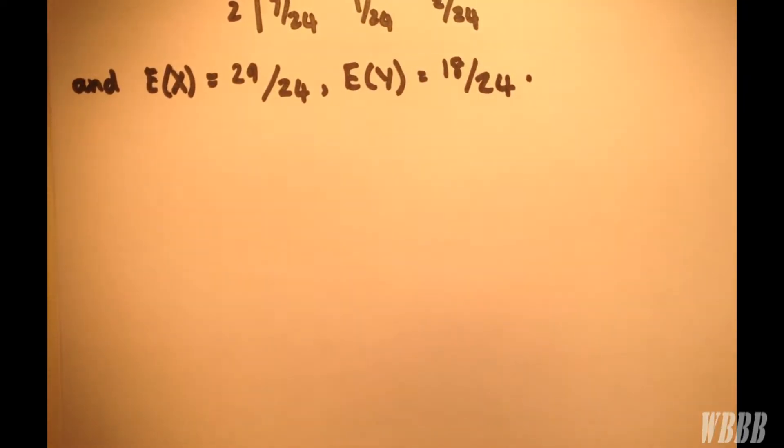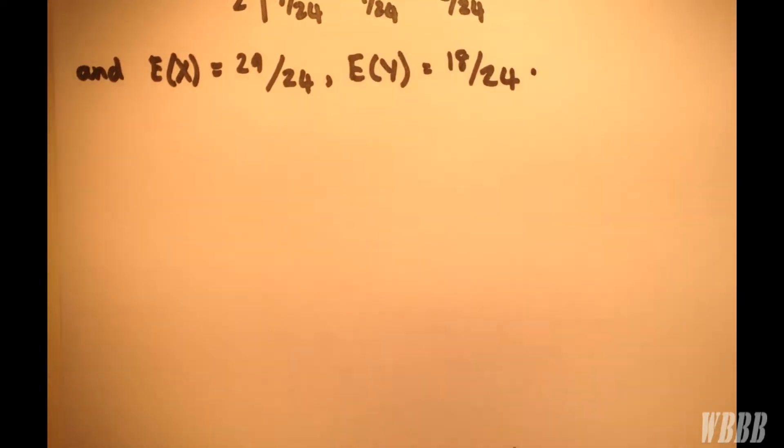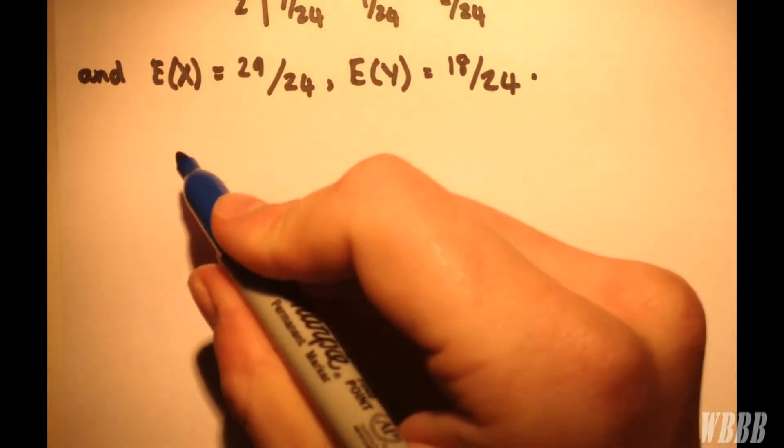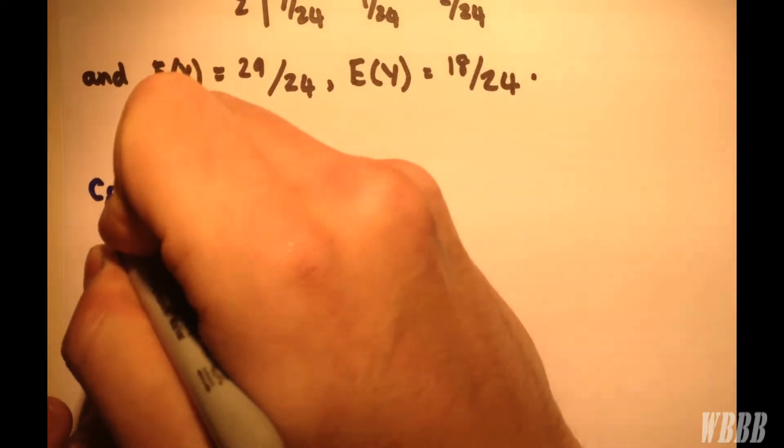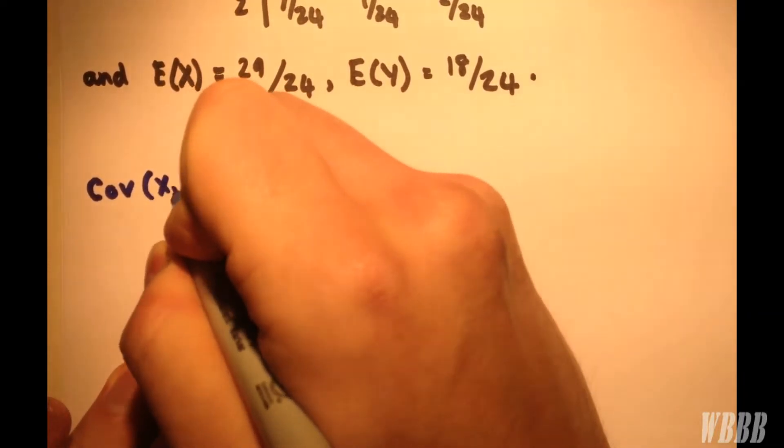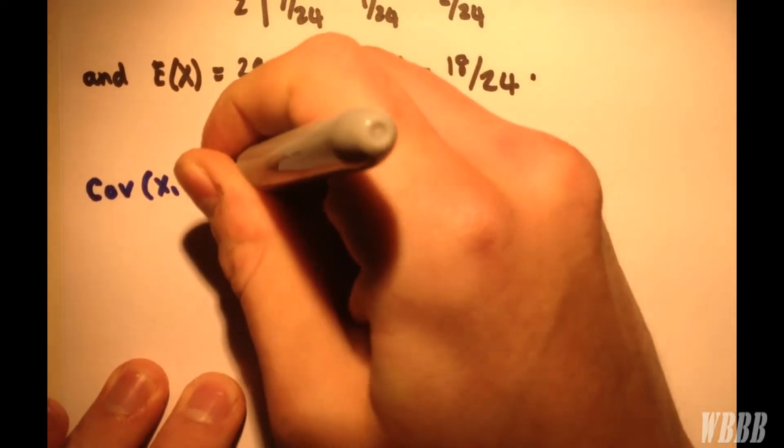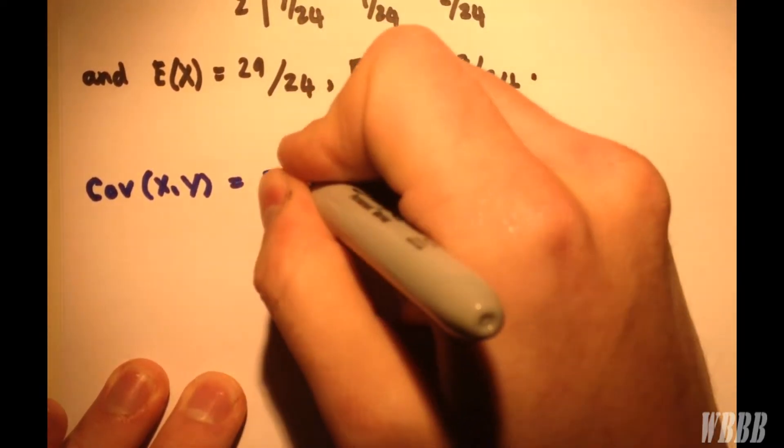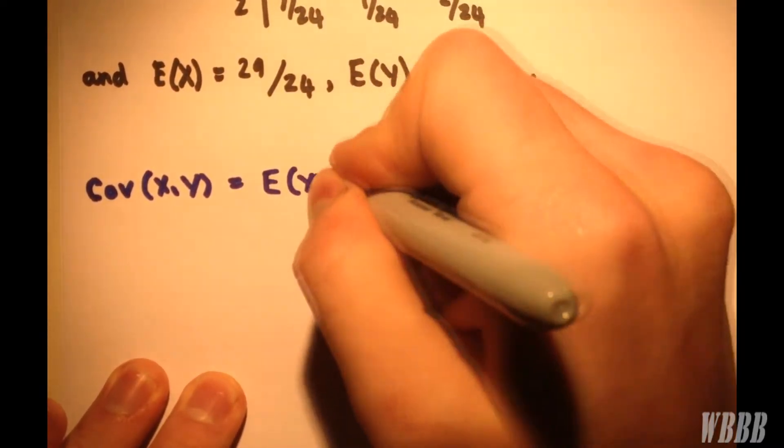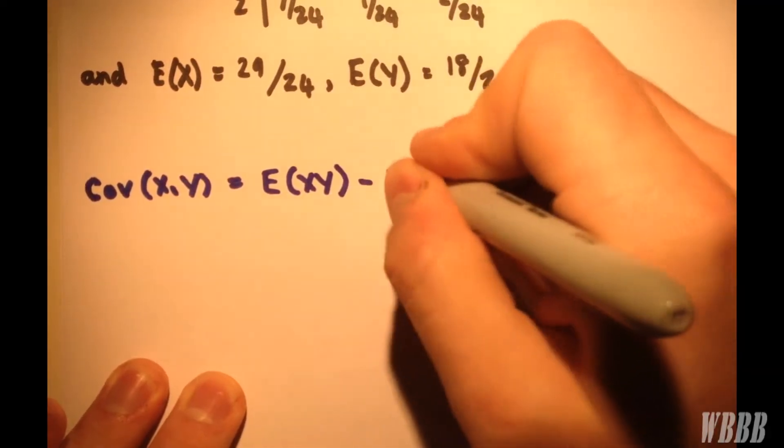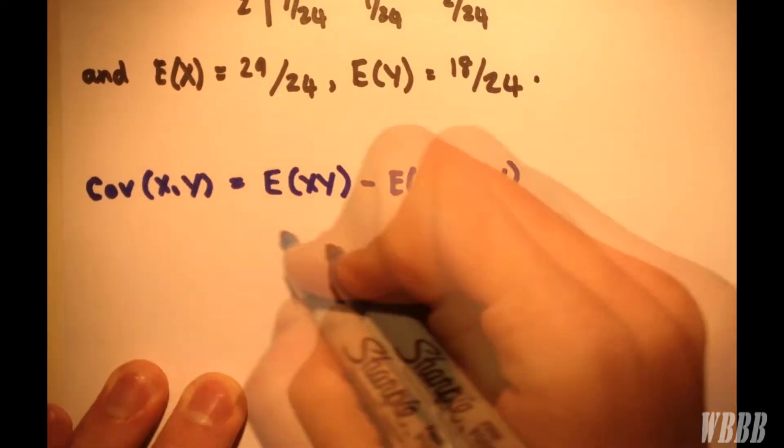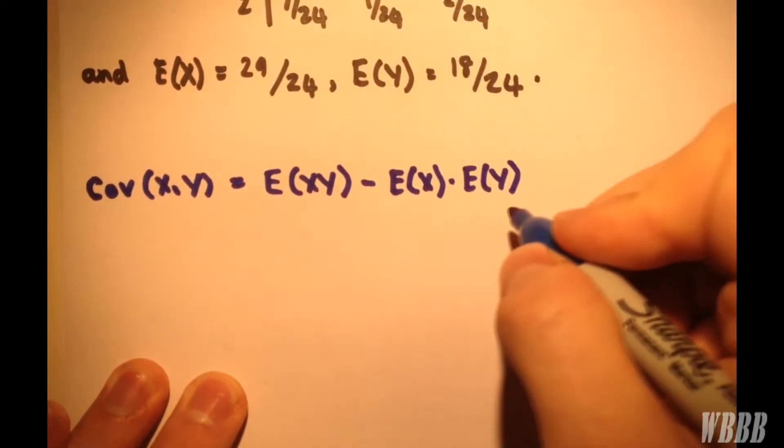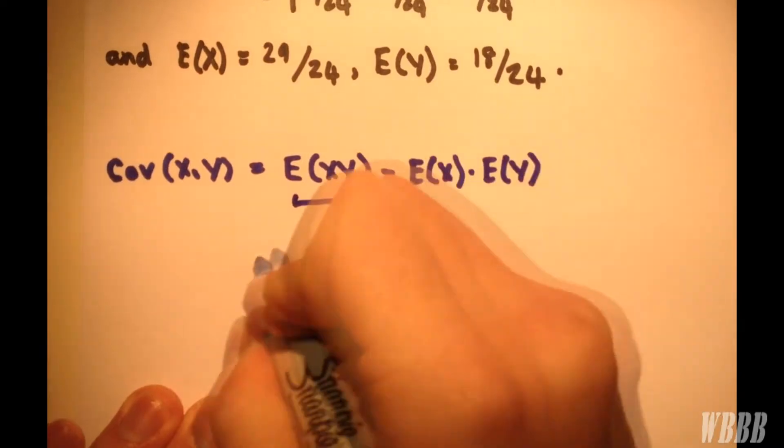I'll try and keep this video as short as possible. So to find the covariance we need to consider the expected values of X and Y and the expected value of XY. The covariance of X, Y is equal to the expected value of XY minus the expected value of X multiplied by the expected value of Y. So we have these bits, having worked them out in the previous videos, and we need this bit.